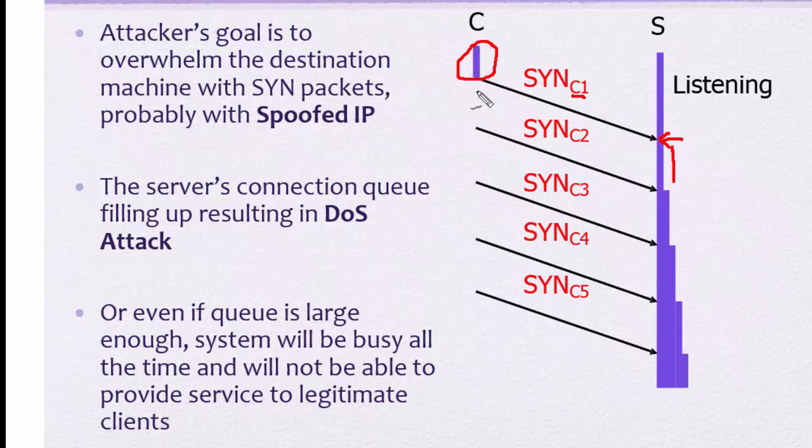And in the same time, the attacker generates another SYN request which is C2, and the response time and the waiting time increases. So this process continues and it generates a huge waiting time which at last slows down the server, slows down the machine, slows down the victim. So here what it shows, the server's connection queue filling up, resulting in DoS attack.